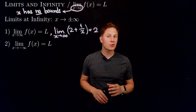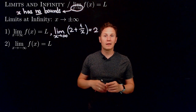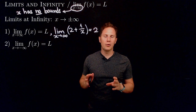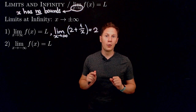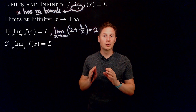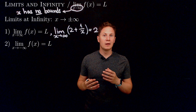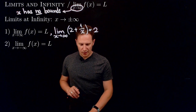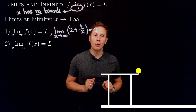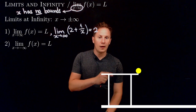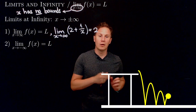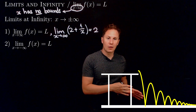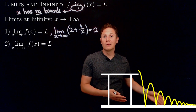You may think that because limits at infinity involve infinity, they cannot really be applied to real-world examples — but that's far from the truth. Limits at infinity are super useful whenever we look at the long-term behavior of a process. For example, consider a ball falling off a table, bouncing on the floor, and with each bounce losing some of its initial energy. The height of the ball as a function of time has a limit at infinity, which is the height of the floor.